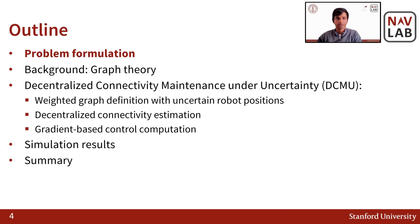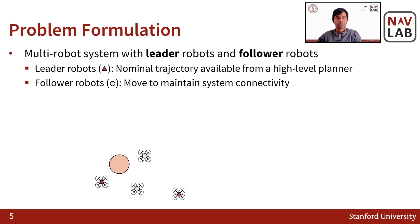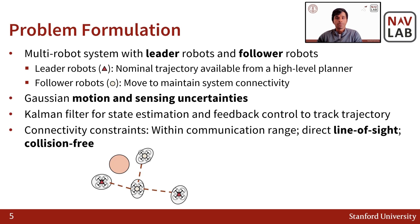For our problem setup, we consider the multi-robot system to consist of two types of robots: leader robots and follower robots. For leader robots, we assume that the nominal trajectory is available from some high-level plan — for example, a high-level exploration strategy to explore unknown areas. On the other hand, follower robots are tasked with rearranging themselves in order to maintain connectivity within the multi-robot system. In terms of uncertainty, we assume each robot to be affected by Gaussian motion and sensing uncertainties. Each robot uses a common filter for state estimation and uses feedback control to track the trajectory. This setup for each robot results in a Gaussian distribution of the robot's position about its nominal trajectory, shown by gray ellipses.